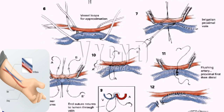Hemostasis is achieved and the subcutaneous layers are closed with interrupted 3-0 absorbable suture. The skin is closed with a running subcuticular 4-0 absorbable suture, and a sterile dressing is then placed. The patient is discharged on the day of the procedure. If needed, dialysis is continued via the temporary access achieved prior to the operation. Occasionally, a venous side branch creating diversion of flow may need ligation. It usually takes six weeks for the arteriovenous fistula to mature and be ready for hemodialysis.